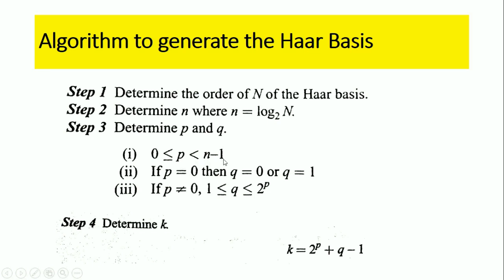If p equals zero, then q equals zero or q equals one. If p is not equal to zero, then the q value is in the range one less than or equal to q less than or equal to two to the power of p. Step four: determine the k value, where k equals two to the power of p plus q minus one.